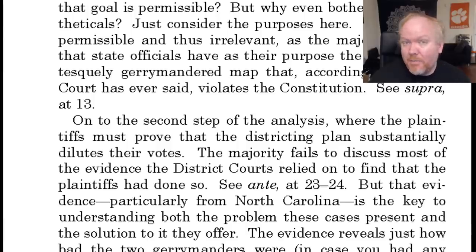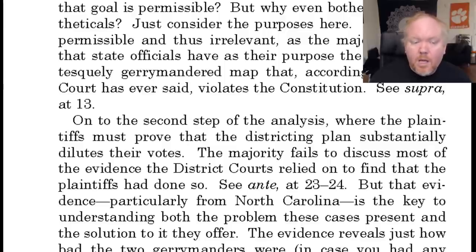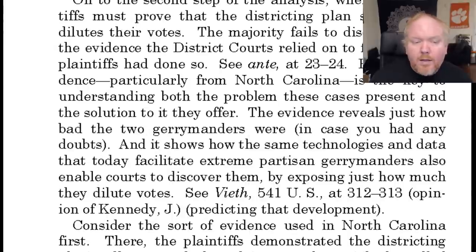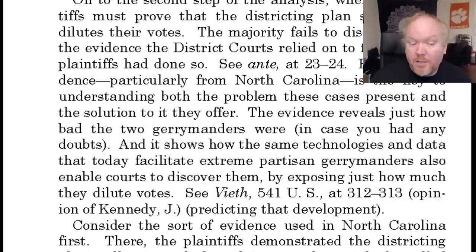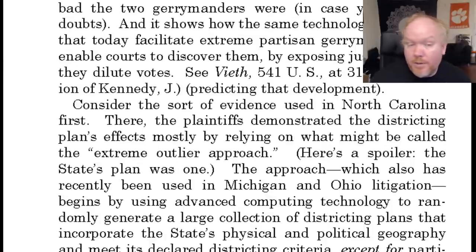Now a look at Kagan's dissent, which helps highlight the nature of the problem the court was faced with. On the second step of the analysis, plaintiffs must prove that the districting plan substantially dilutes their votes. The majority fails to discuss most of the evidence the district courts relied on. But that evidence — particularly from North Carolina — is key to understanding both the problem these cases present and the solution they offer. It reveals just how bad the two gerrymanders were, and shows how the same technologies that facilitate extreme partisan gerrymanders also enable courts to discover them.